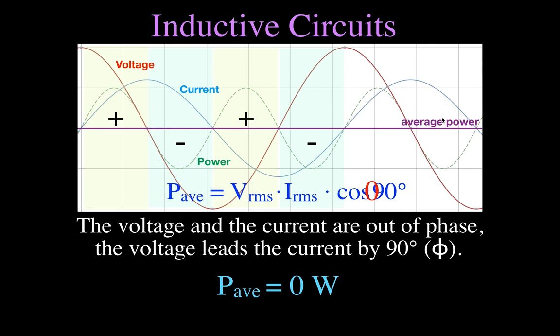What is the difference between positive and negative power? When the power is positive, it simply means the power is flowing from the source to the load. When the power is negative, the power is flowing from the load back toward the source. That's power for AC inductive circuits, and the average power is zero.